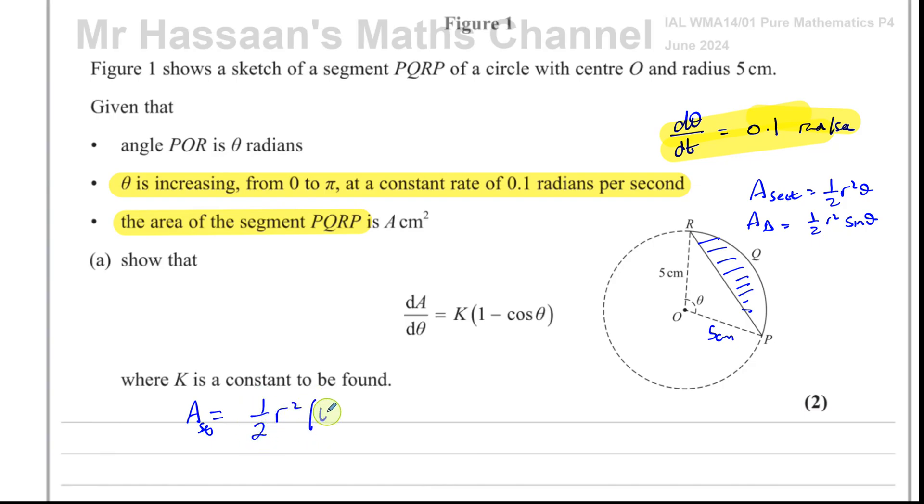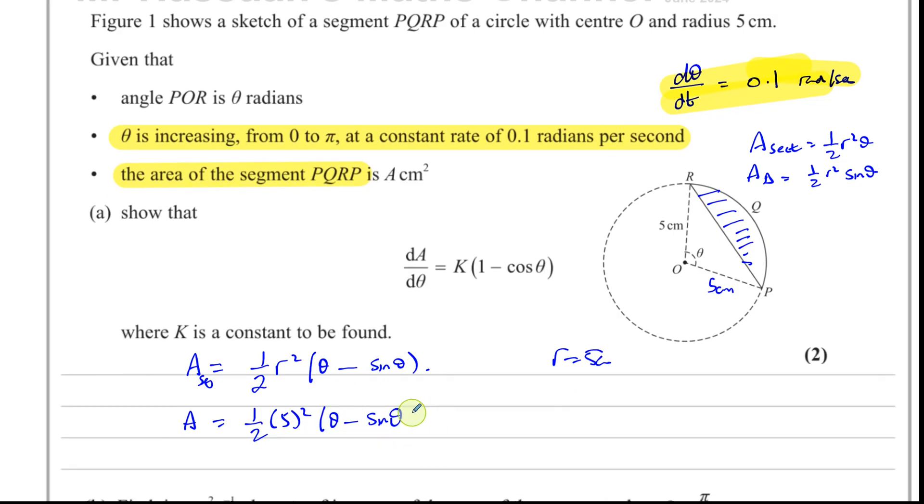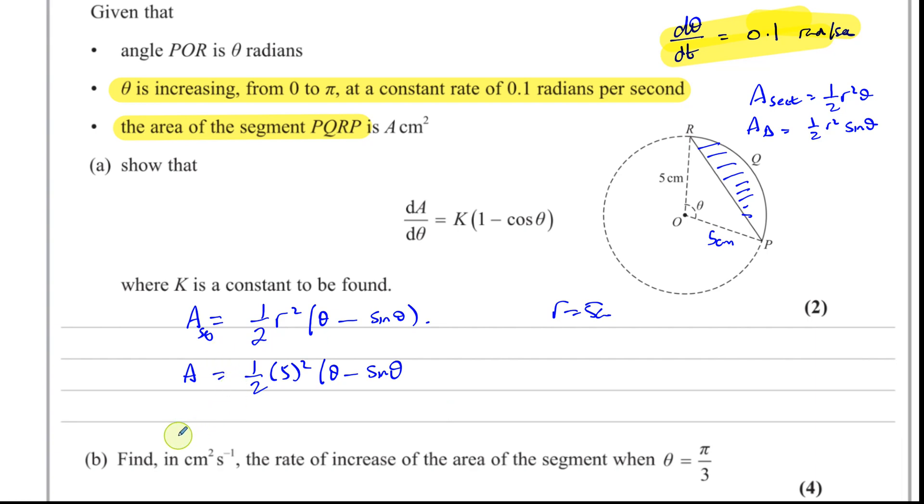1/2 r² times theta minus sine theta. Now, r is equal to five, as they told us. So we can say that the area, A, which is defined as A, is equal to 1/2 times five squared, times theta minus sine theta. So this area is going to be 25/2 times theta minus sine theta. That's A.